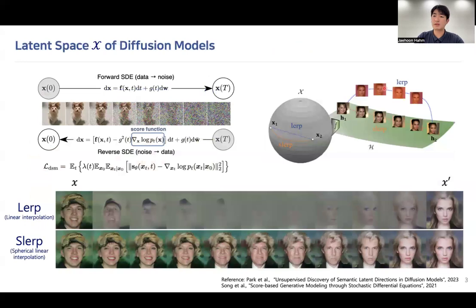We use two latent spaces of diffusion models in our work, x and h. First, latent space x is the ordinary noise space of diffusion models, which is defined as Gaussian noise.